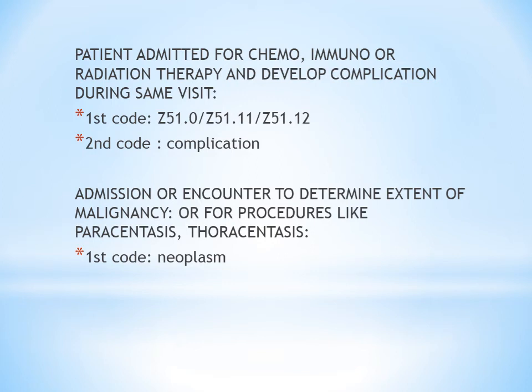Next: patient admitted for chemotherapy, immunotherapy, or radiation therapy and develops a complication during the same visit. For example, a patient comes for chemotherapy and during the same visit develops nausea or severe vomiting. The first code should still be the encounter code — if it is chemotherapy, the first code is the Z51 encounter for antineoplastic chemotherapy — and the second code is the complication code, such as the code for nausea.